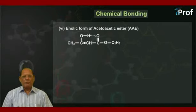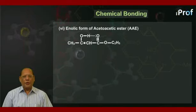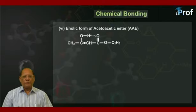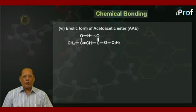The sixth example is the enolic form of acetoacetic ester (AAE). Acetoacetic ester has two tautomeric forms: the keto form and the enolic form. It is the enolic form that involves intramolecular hydrogen bonding, as shown by the structure given here.